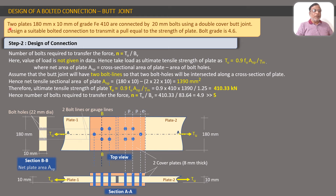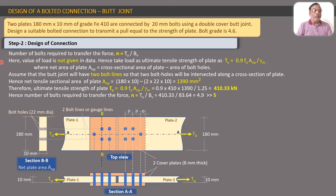We continue with Step 2: design of the connection. The connection design involves calculating the number of bolts and showing their arrangement in a drawing. The formula is N = TU / BV, where TU is the total force the connection must transmit and BV is the bolt value. Since TU is not directly given, we must calculate it as the ultimate tensile strength of the plate.